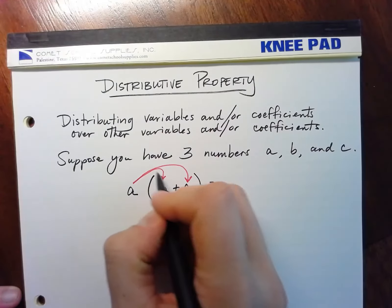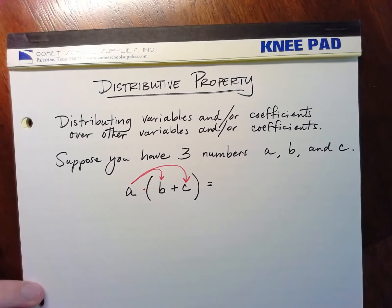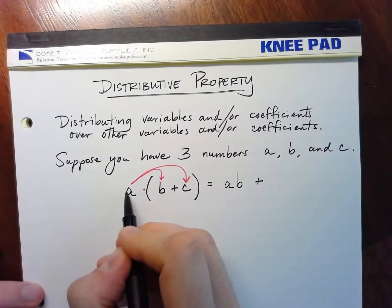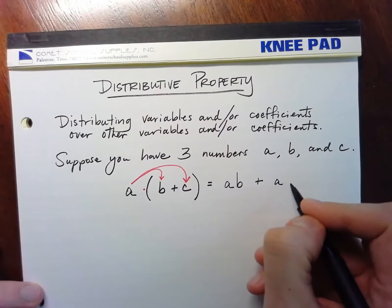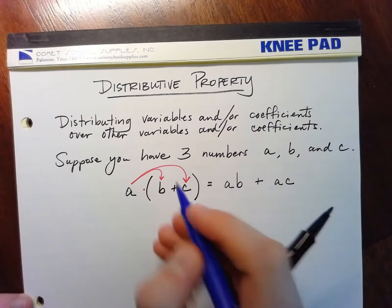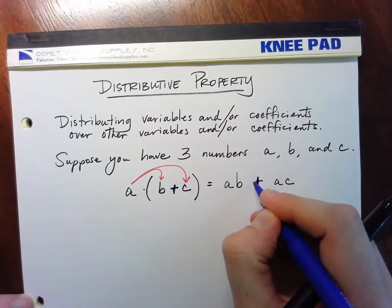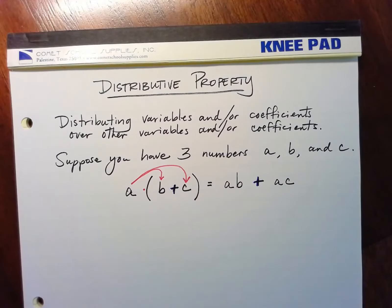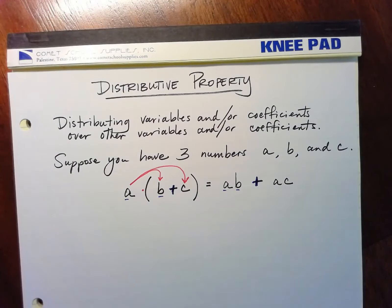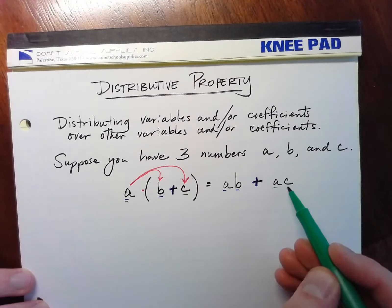So A times (B plus C) gives you A times B plus A times C, because the parentheses mean multiplication. This plus in the result is the same as the plus inside the parentheses. So A times B is AB, and A times C is AC.